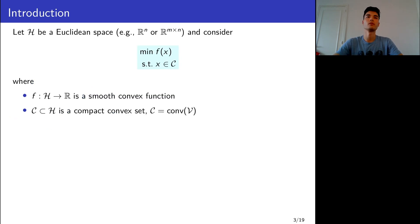Consider the following optimization problem where we are in R^n or a space of matrices. I assume F to be smooth and convex and C to be a compact convex set, and let V be a set such that its convex hull is C. For example, if C is a polytope, we can let V be the set of vertices.